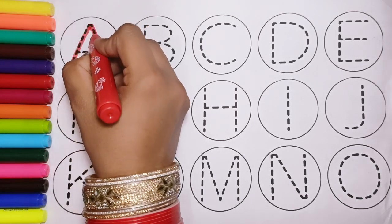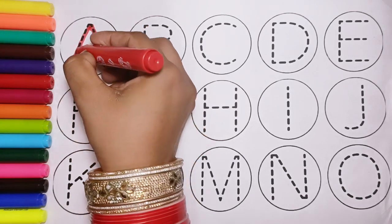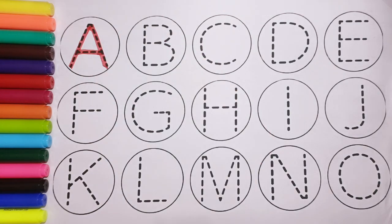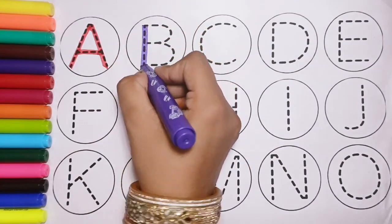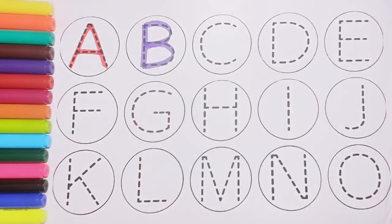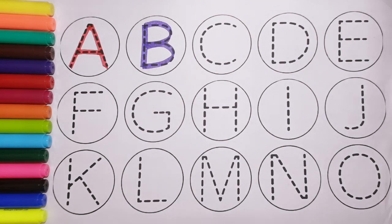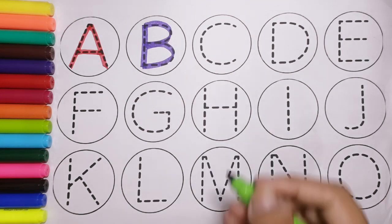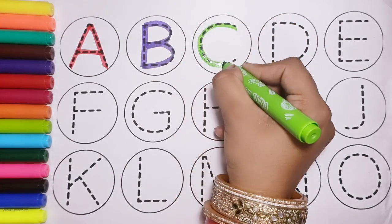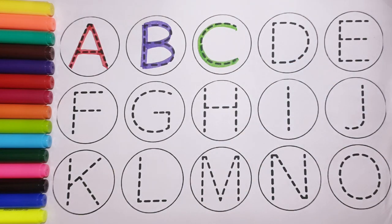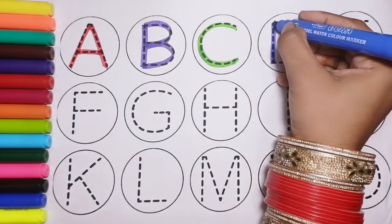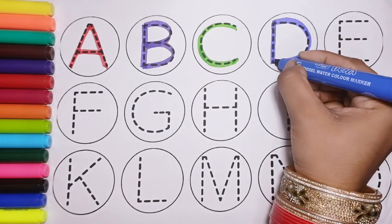A, A for Alligator. B, B for Balloon. C, C for Cow. D, D for Dolphin.